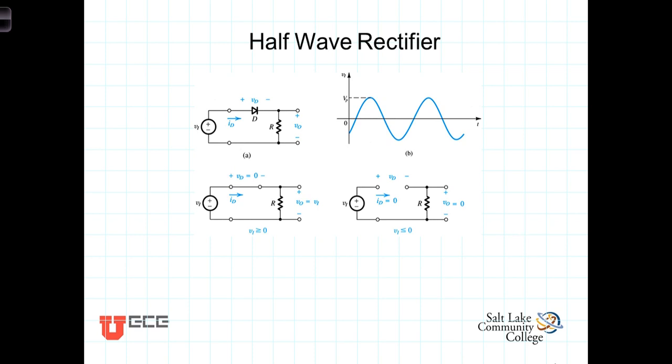This circuit is referred to as a rectifier circuit. We have here a voltage source that is varying sinusoidally with time. Half the cycle is greater than zero and half the cycle is less than zero with an amplitude of V sub P.